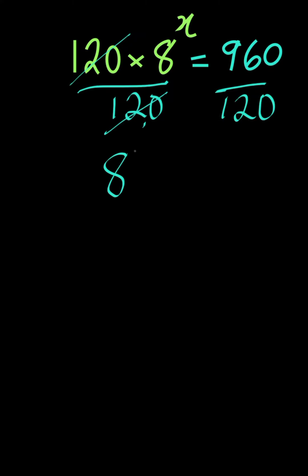We have 8 to the power of x is equal to... cancel the zero... and 96 divided by 12 is the same thing as 8.